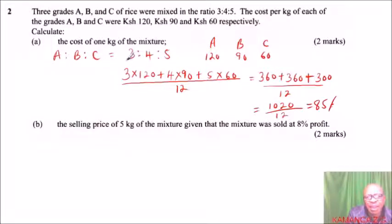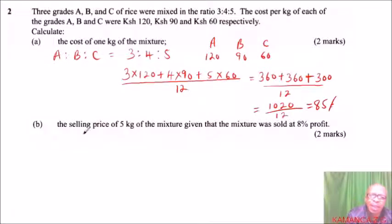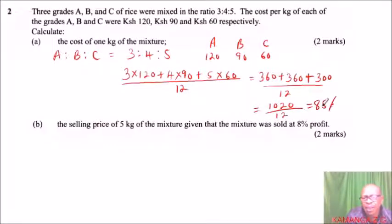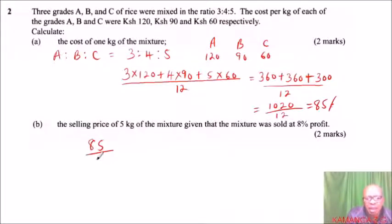We used the ratio so that the proportion remains even in the mixture. For part (b), we need the selling price of 5 kg of the mixture given it was sold at 8% profit. The cost of 1 kg is 85 shillings, so we find the selling price with the profit included.